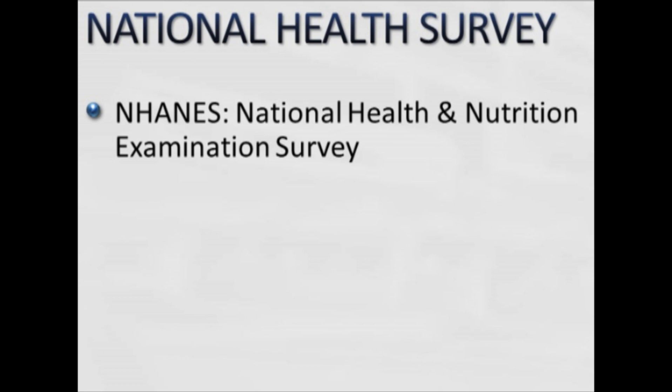The most popular and utilized of the national health surveys is called NHANES — the National Health and Nutrition Examination Survey. NHANES is done over various time periods, and searching it in Google shows different year demarcations that establish certain facts about the way Americans are eating. With these different cross-sectional surveys we're able to see either a progression or improvement in dietary habits, or a decline in dietary habits or obesity prevalence.